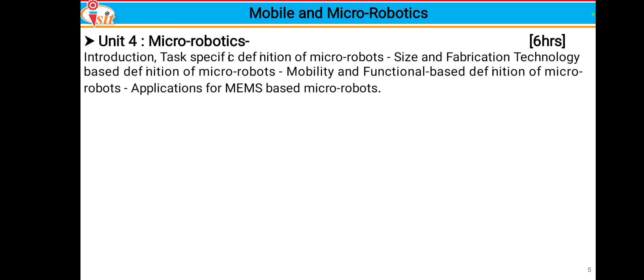Unit 4 will cover micro robotics. We will first see an introduction to micro robotics — as noted in the definition, micro robotics covers robots from a few micrometers to centimeters in size. Topics include task-specific definitions of micro robots, size and fabrication technology-based definitions, and mobile and functional-based definitions of micro robots.